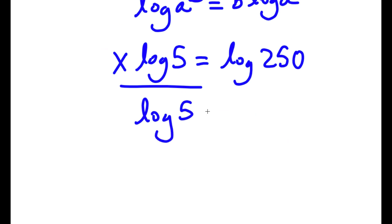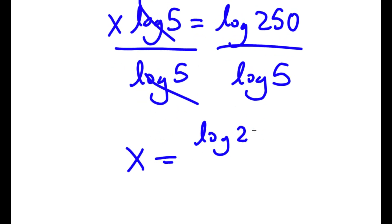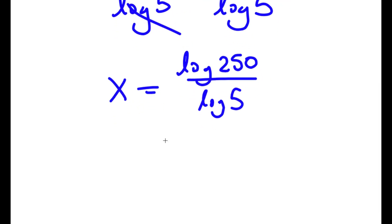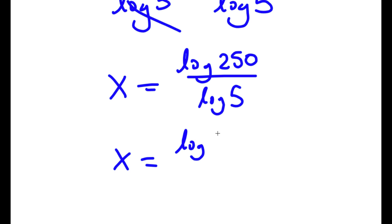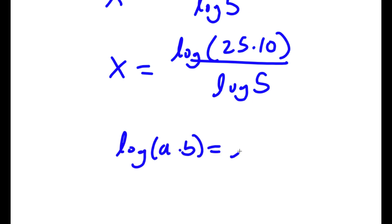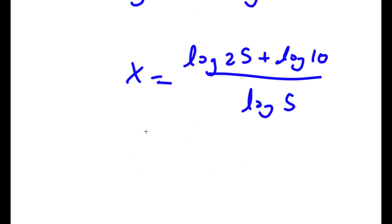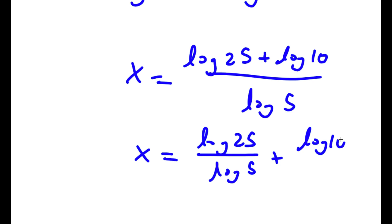Now if I divide both sides by log 5, these two cancel out and I get x is equal to log of 250 over log of 5. Now log of 250, I can rewrite that as log of 25 times 10. And if I have something in the form log a times b, this is going to equal log a plus log b. So log 25 times 10 equals log 25 plus log 10, all over log 5, which equals log 25 over log 5 plus log 10 over log 5.